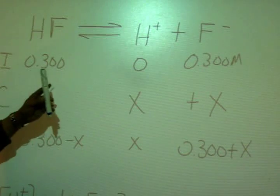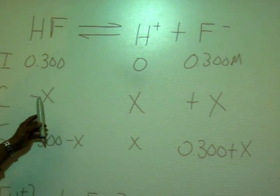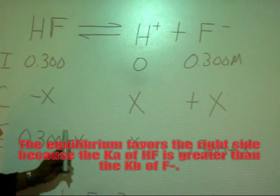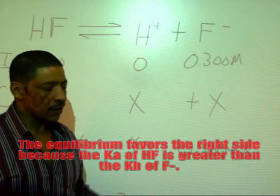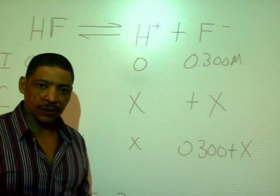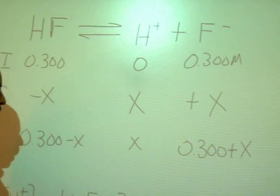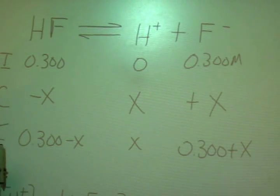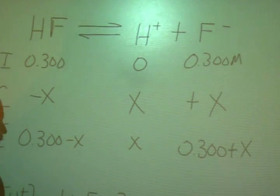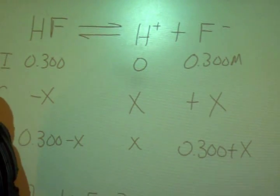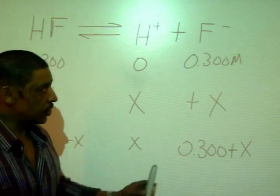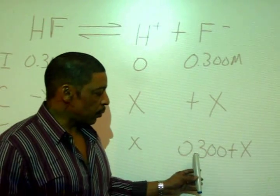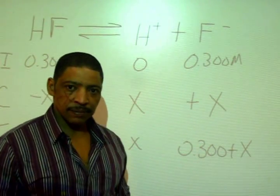As the reaction proceeds towards equilibrium, X amount of our acid will be used up, X amount of hydrogen ion will be produced, and X amount of fluoride ion will also be produced. At equilibrium, our concentration of acid is 0.300 minus X, our concentration of hydrogen ion is X, and our concentration of fluoride ion is 0.300 plus X.